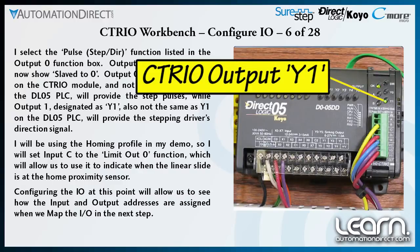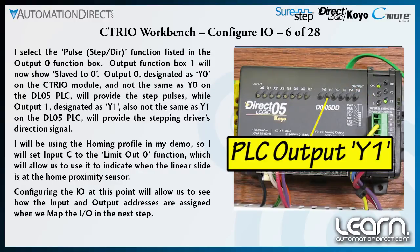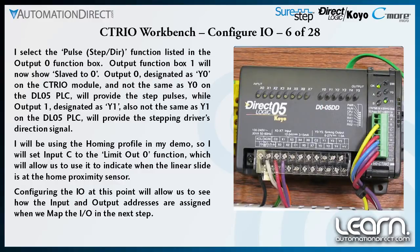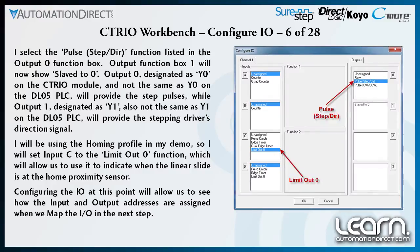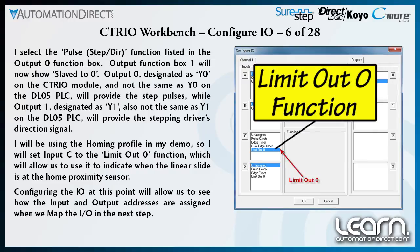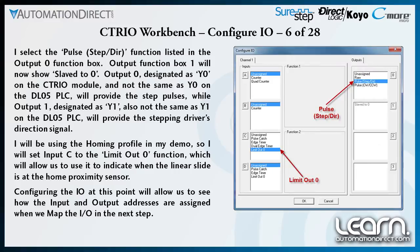Output 1, designated as Y1 — also not the same as Y1 on the DL05 PLC — will provide the stepper drive's direction signal. I will be using the homing profile in my demo, so I will set input C as the Limit Out 0 function, which will allow me to use it to indicate when the linear slide is at the home proximity sensor. Configuring the I/O at this point allows me to see how the input and output addresses are assigned when I map the I/O in the next step.